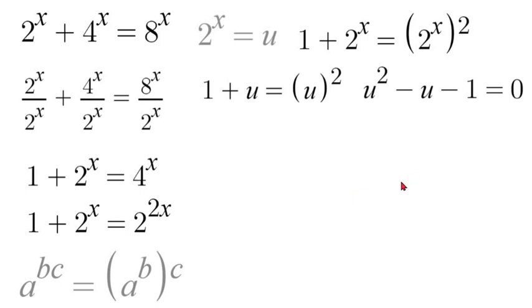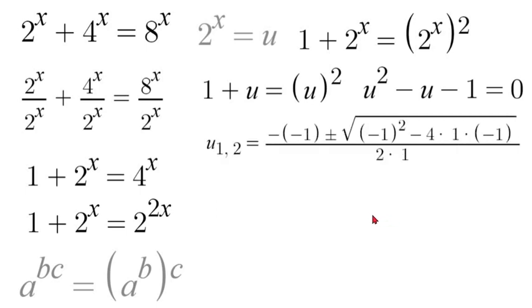But if we used it we would have u is equal to negative 1 plus or minus square root of negative 1 squared minus 4 times 1 times negative 1 all over 2 times 1.